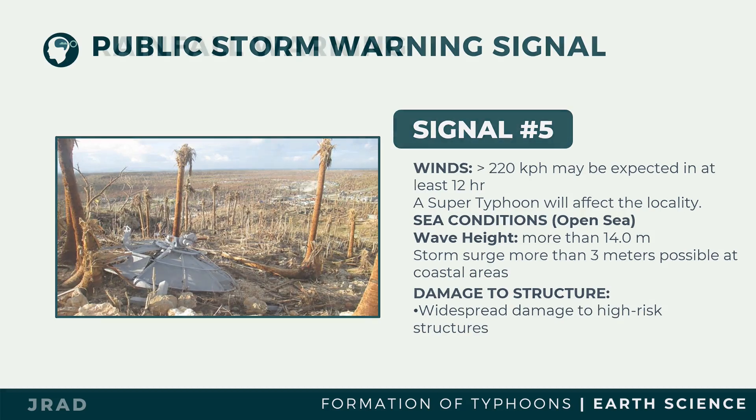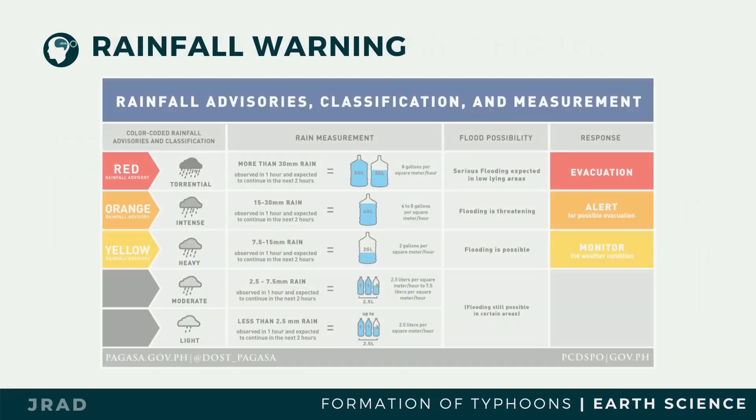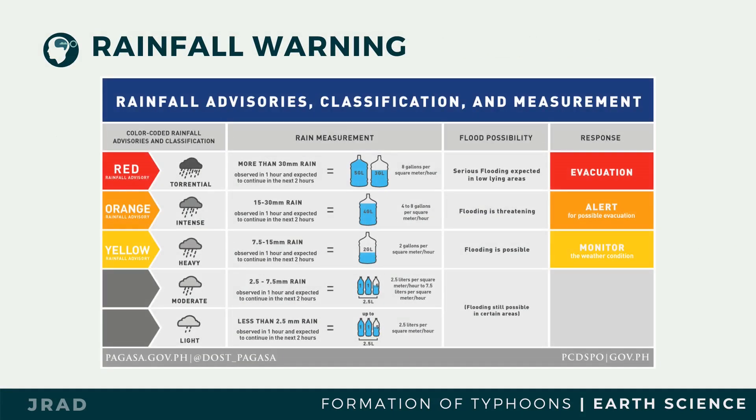Rainfall warning levels are based on rain gauge water height per hour. Yellow advisory means community awareness — flooding is possible in low-lying areas and near river channels. Orange alert means community preparedness — flooding is threatening in low-lying areas and near river channels. Red warning means emergency, requiring community response — severe flooding is expected, and people must take necessary precautionary measures.